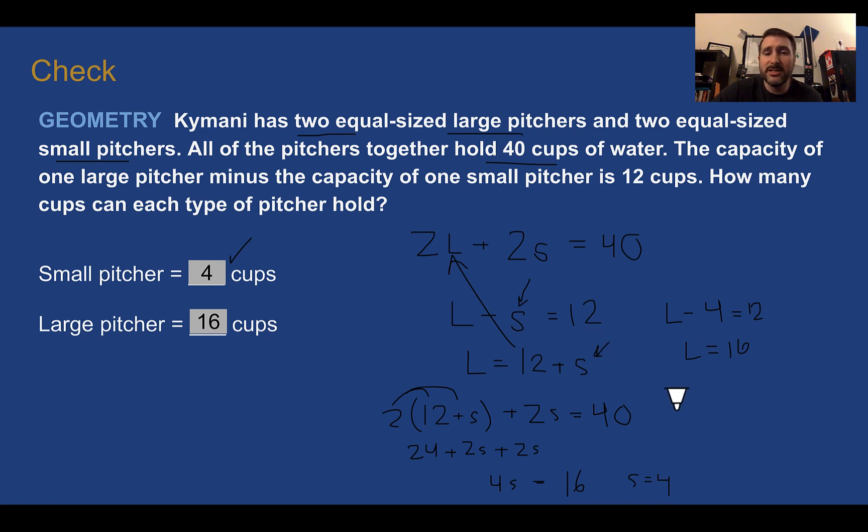And I just plugged in 4 for S in that second equation. Or I could have even plugged it into the one that I rearranged. L is equal to 12 plus 4. So then I would get the large pitcher is 16.